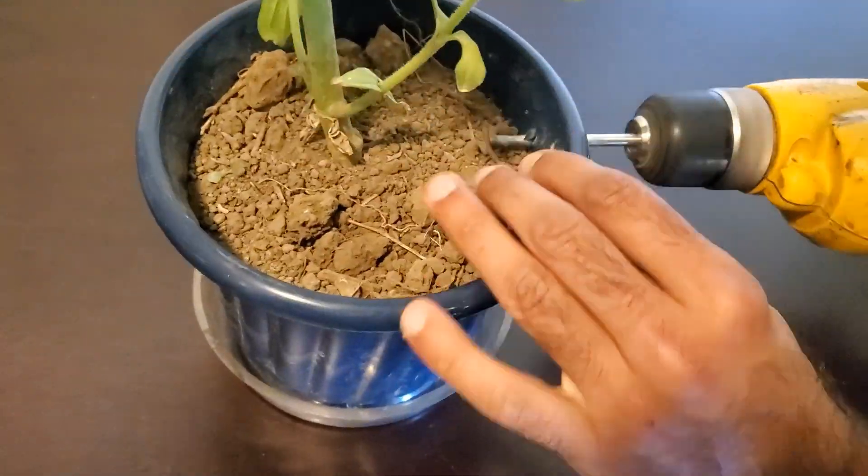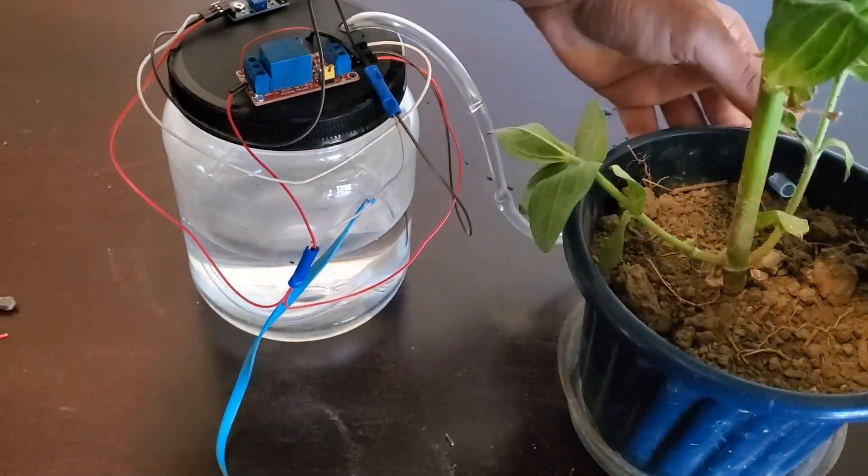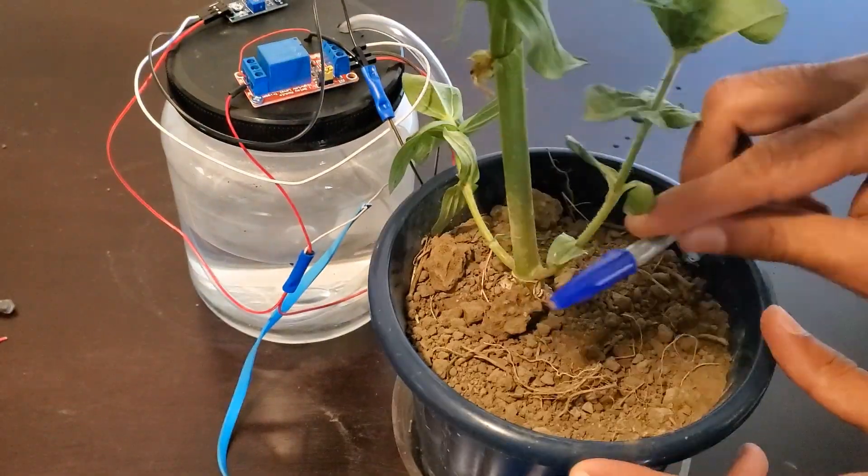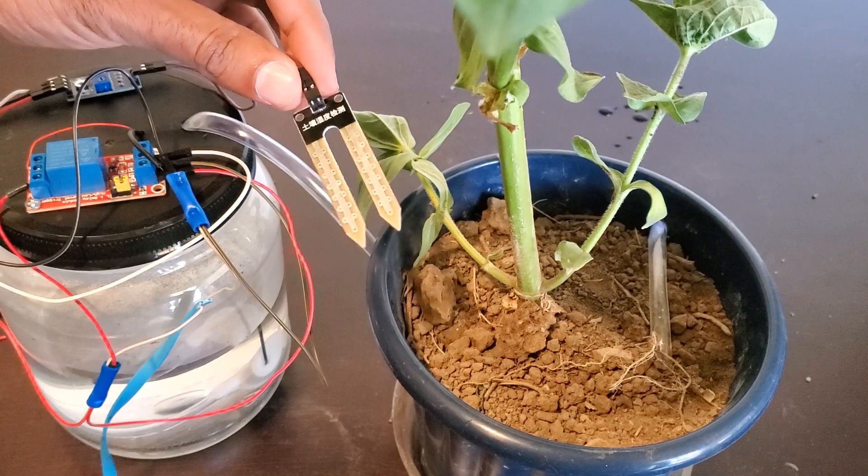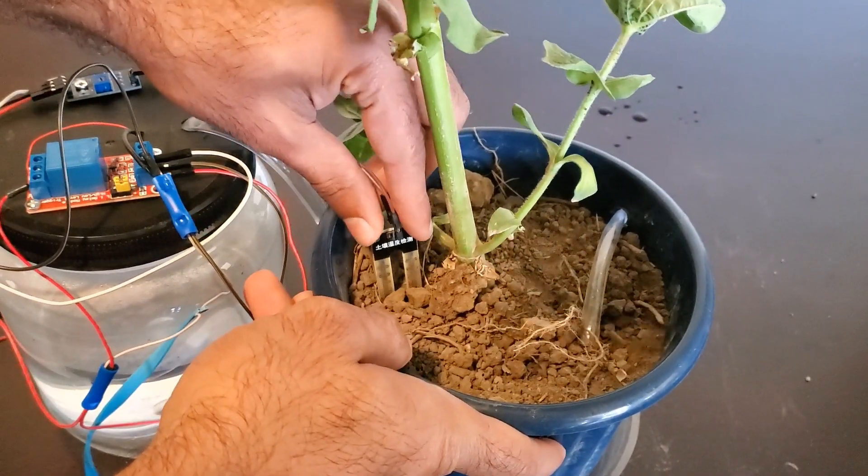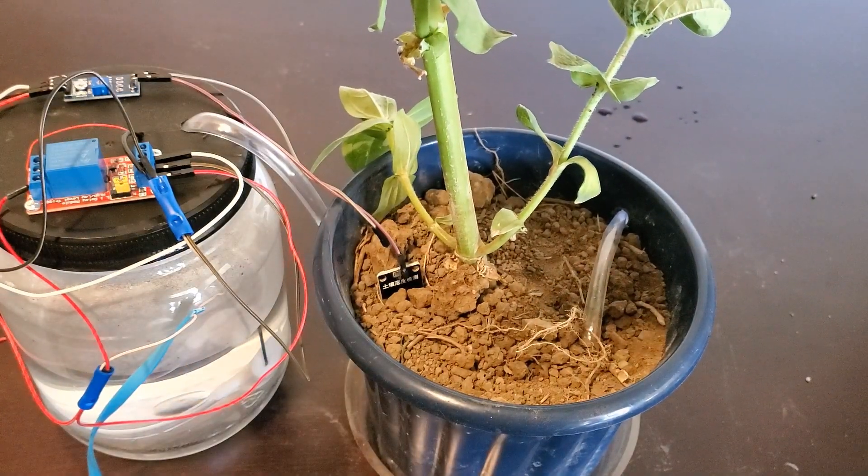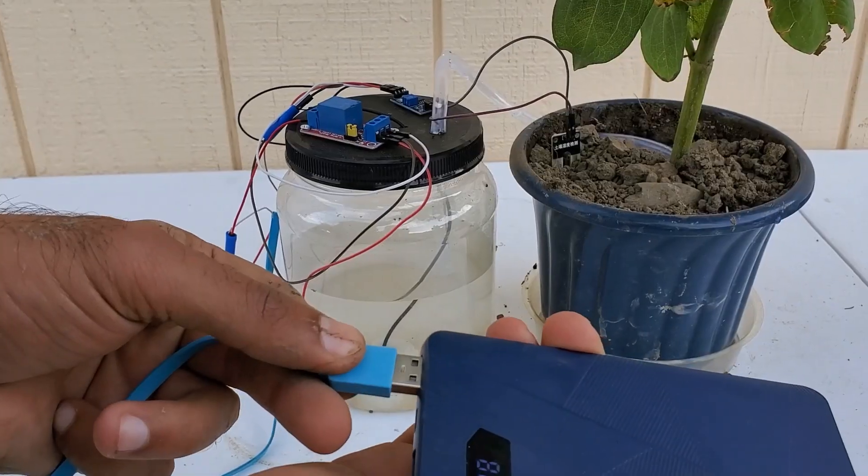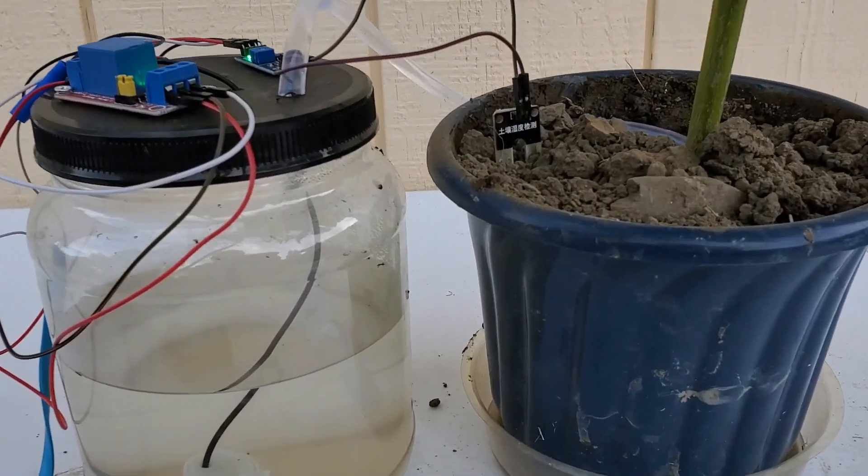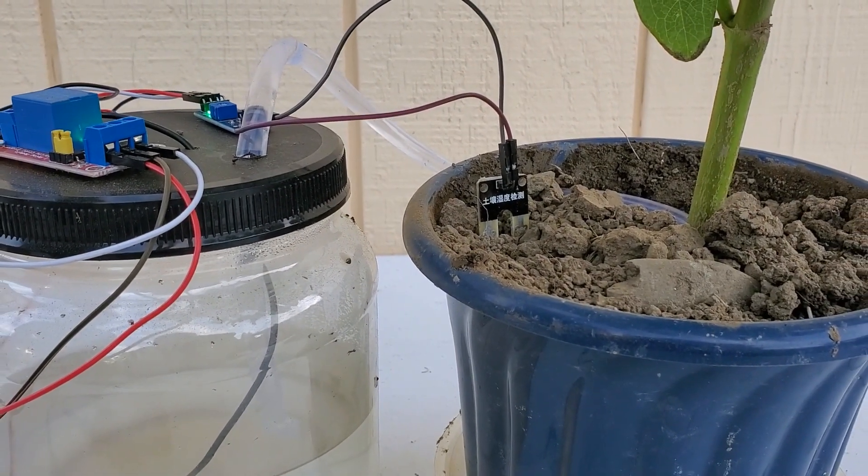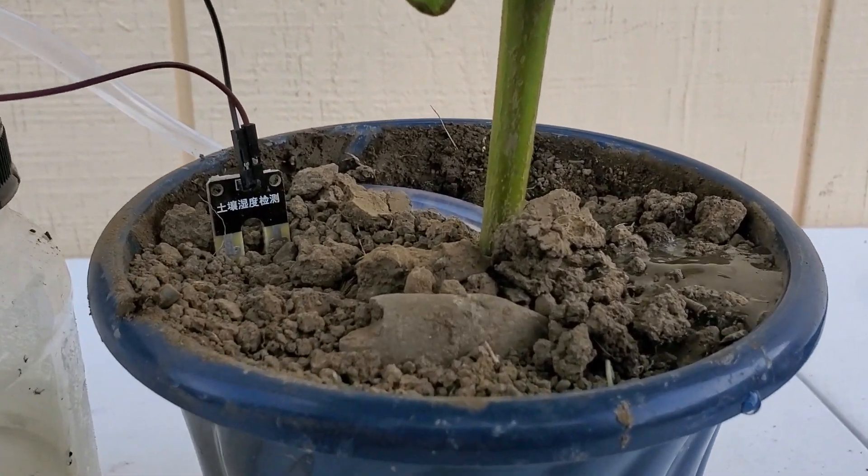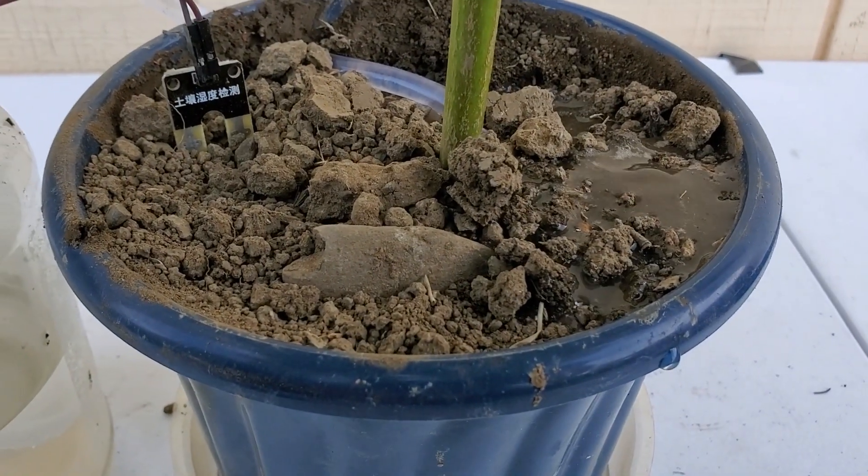Drill a hole and thread the tubing through the pot. Add a nozzle to the end of the tubing to help bury it into the soil. Bury the soil sensor. You may have to adjust this later. After filling the jug up with water, attach the USB to a power bank if you want the portability, or you can also attach it to a 5 volt wall adapter.